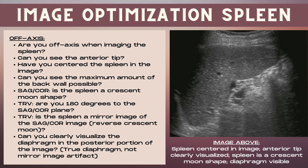Ask yourself: can you see the anterior tip of the spleen? One of the most common mistakes is that the spleen is not centered within the image and either the anterior tip or the back border is cut off. Ask yourself: can you see the anterior tip, is the spleen centered, and have you included the maximum back wall possible? For a sagittal or coronal plane the spleen should be a crescent moon shape; for a transverse plane it should be 180 degrees to the sagittal plane, appearing as a reverse crescent moon shape.